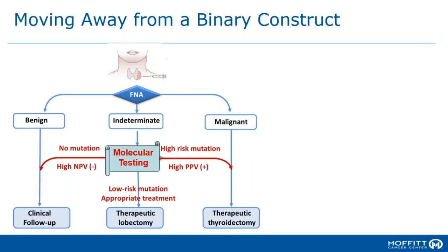For those many nodules with low-risk mutations, where we're dealing likely with either pre-malignant or very early malignant disease, a therapeutic lobectomy is an appropriate way forward. Taking this approach, we've moved away from where we believed molecular markers were taking us five to seven years ago — which was in the direction of more aggressive surgery — to this much more nuanced approach.